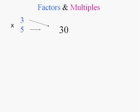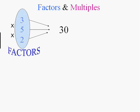5 is a factor of 30, goes in evenly. 2 is a factor of 30. Usually the factors are smaller than that number because they have to go into it. So those are the factors.